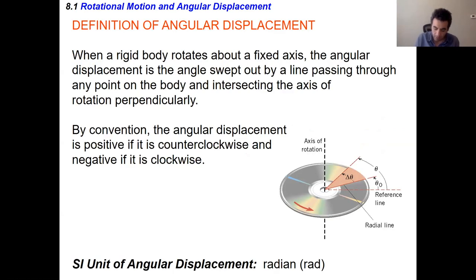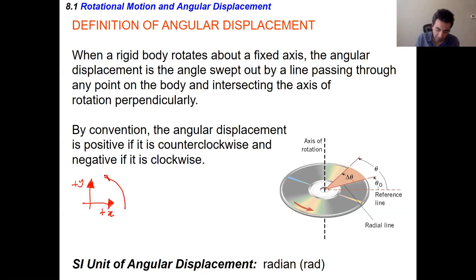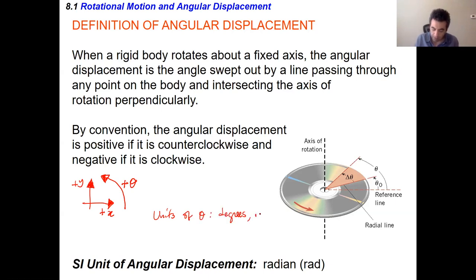Just as in kinematics we had to choose which direction is positive for x and y, we fix a convention for angles: if the angle is increasing counterclockwise, we call that positive. There are many units for angle — you can measure in degrees, radians, or revolutions.